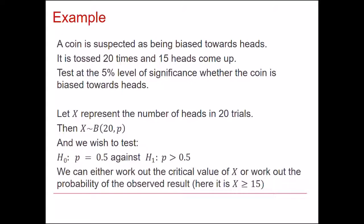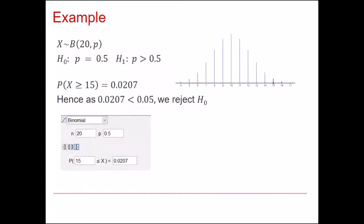So we're going to find the probability that X is greater than or equal to 15. So using the statistical package, you can see that that probability is 0.0207, which is less than the 5% that we decided on for our significance level. So we would reject H0. There is evidence to suggest that this coin is biased towards heads.